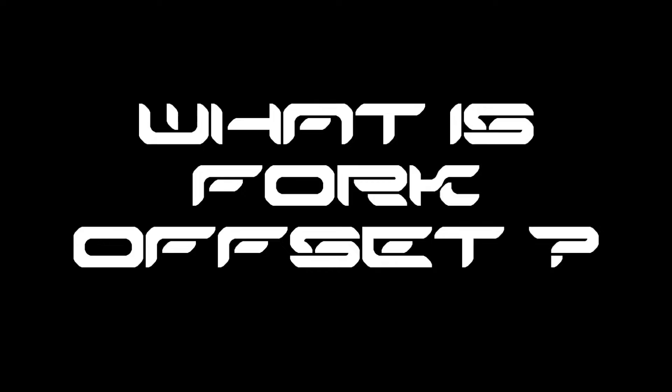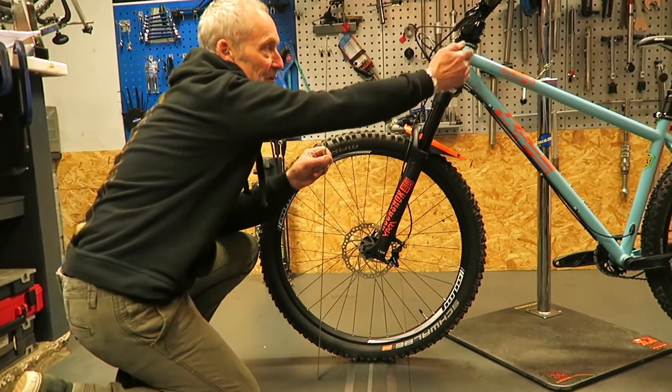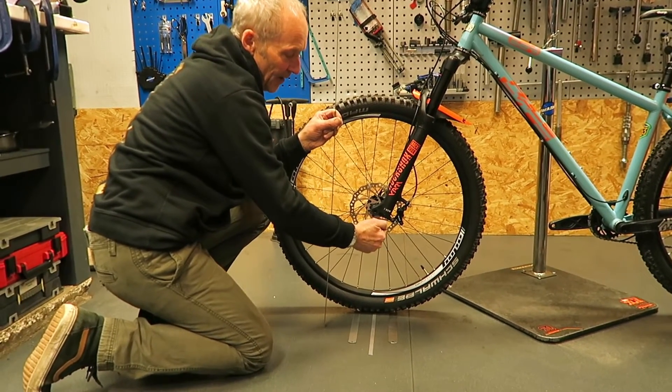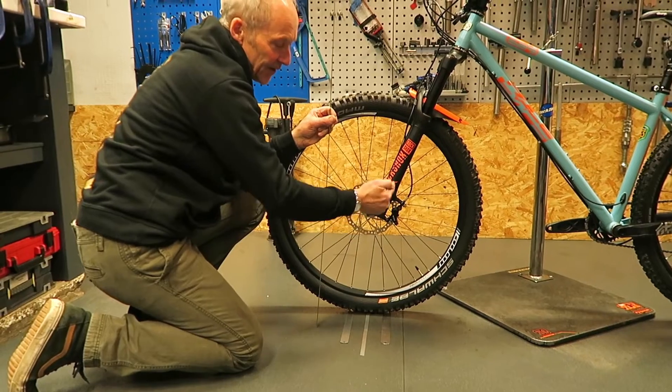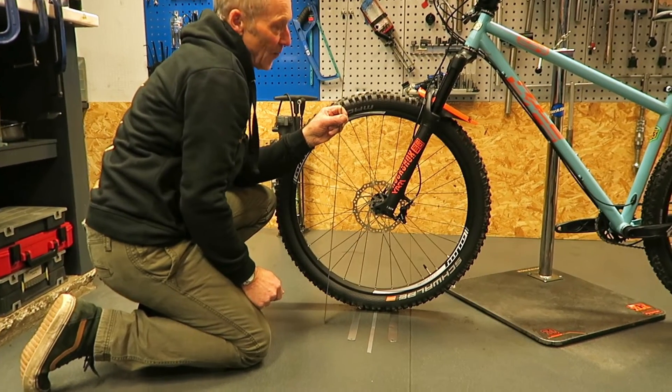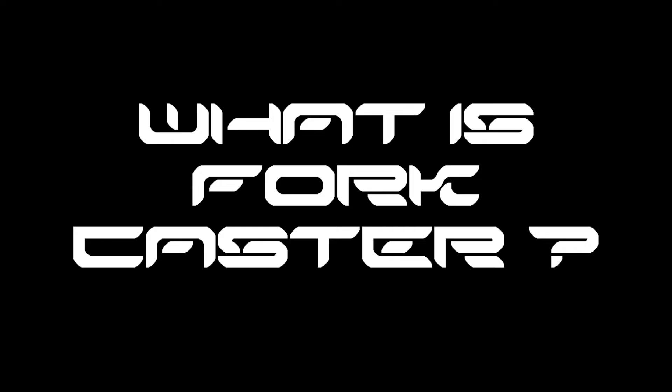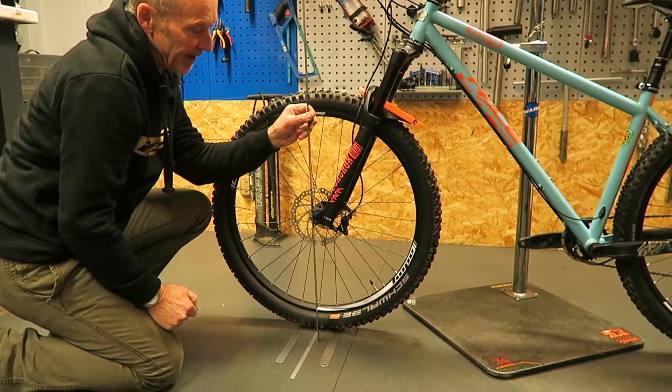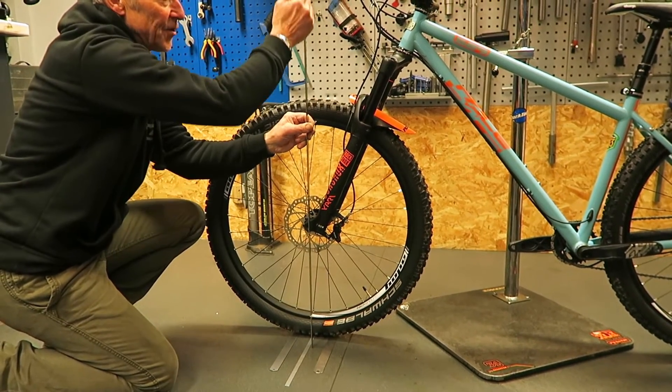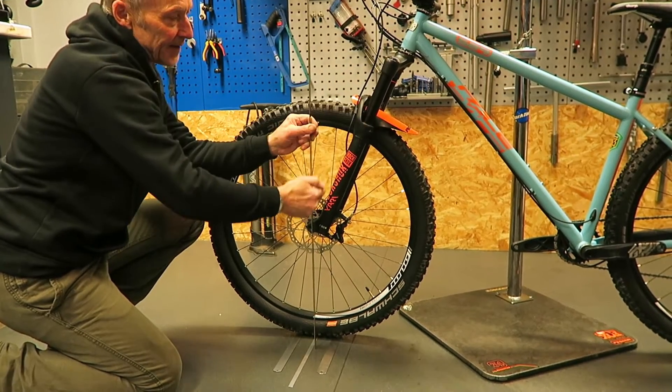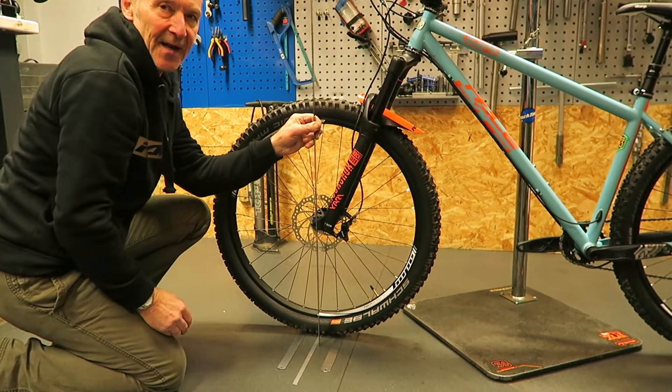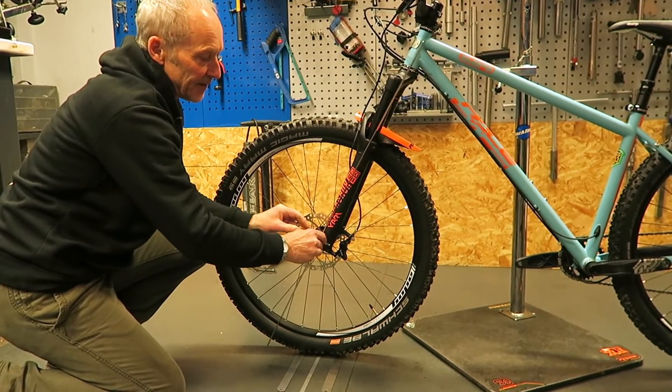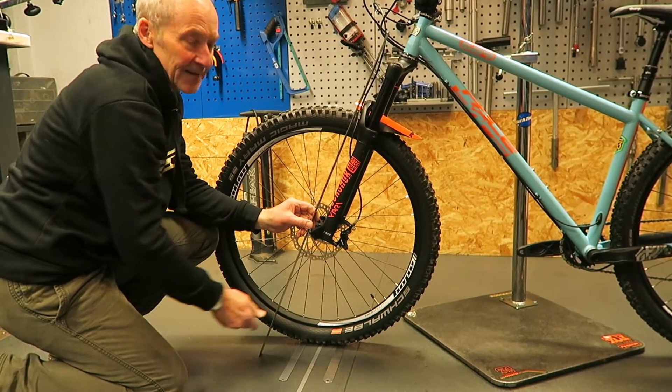We also have this thing called fork offset. Fork offset is effectively the difference between the same line we drew through the steering axis and then the amount that the axle is offset at right angles to that line. We also have an angle that sometimes is referred to as rake or caster. Motorcycles and mountain bikes nearly always use head angle as a reference, which is taken as an angle relative to the ground.